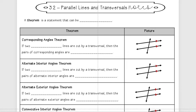Hello everyone. Today we are going to be continuing to chapter 3 and we're going to be looking at parallel lines and transversals. We're going to be applying more of those definitions that we learned last time with those angle pairs — the corresponding, alternate interior, alternate exterior, and consecutive interior angles.